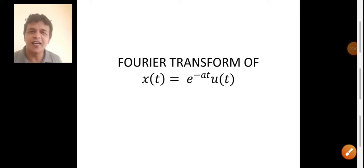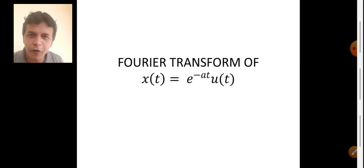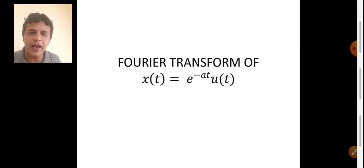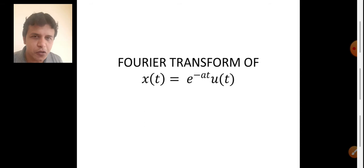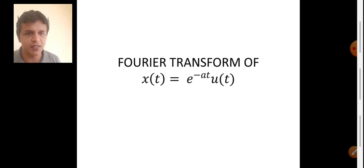Hi everyone, the channel Easy Lecture welcomes you. In our previous video, we found the Fourier transform of the unit step signal. In this video, we are going to discuss how to find the Fourier transform of e to the power minus at into u of t. We have come across this problem in one of the Anna University semester examination question papers. So let us enter into the video.